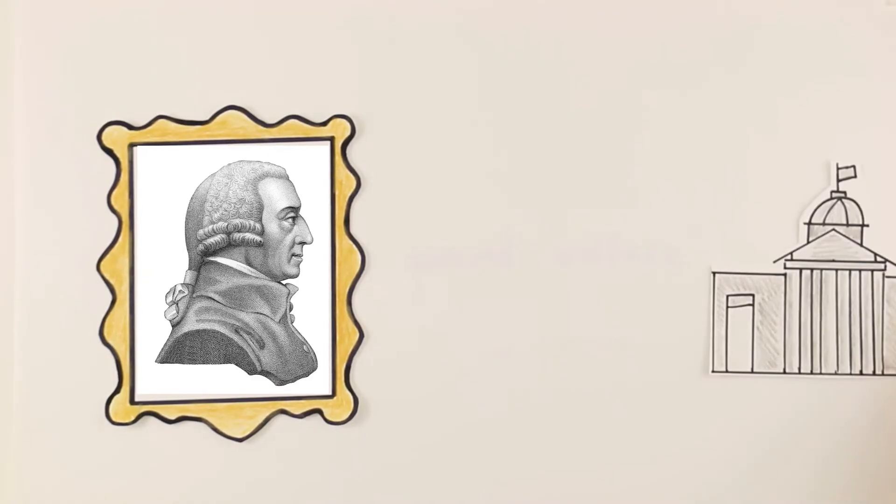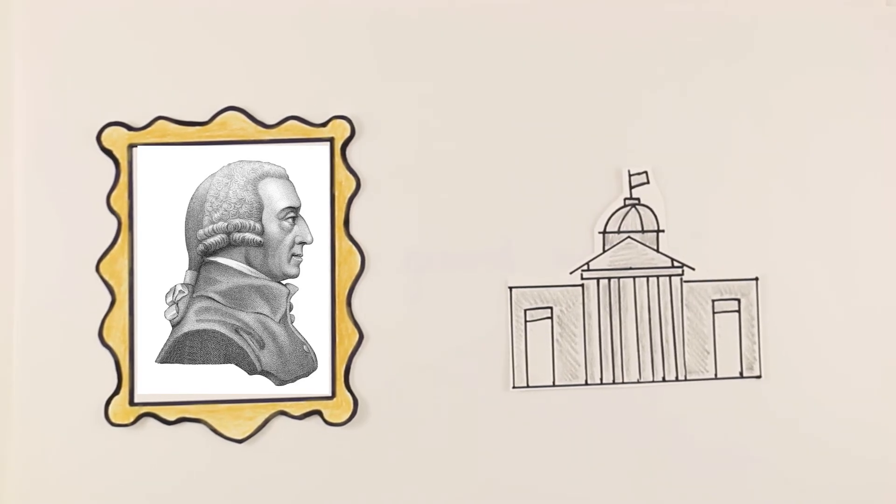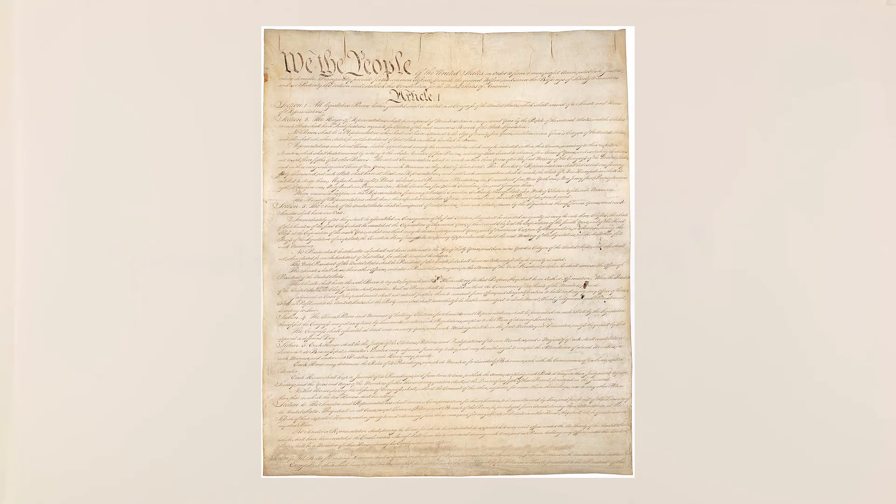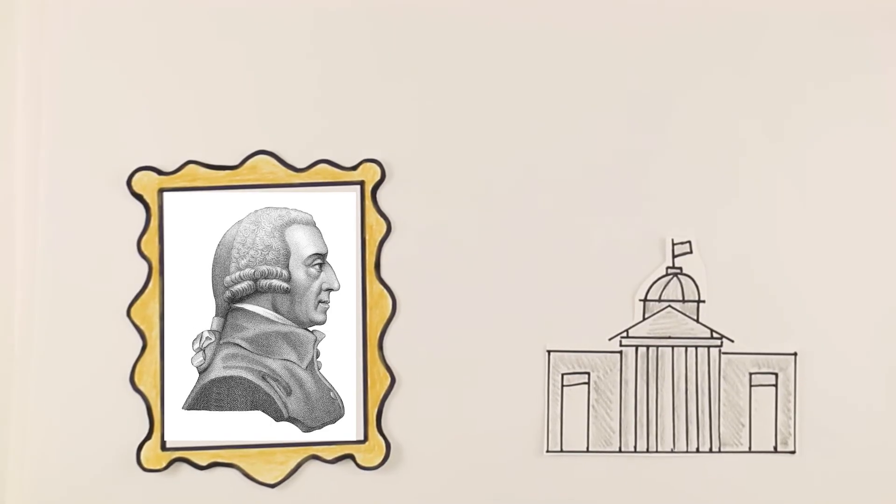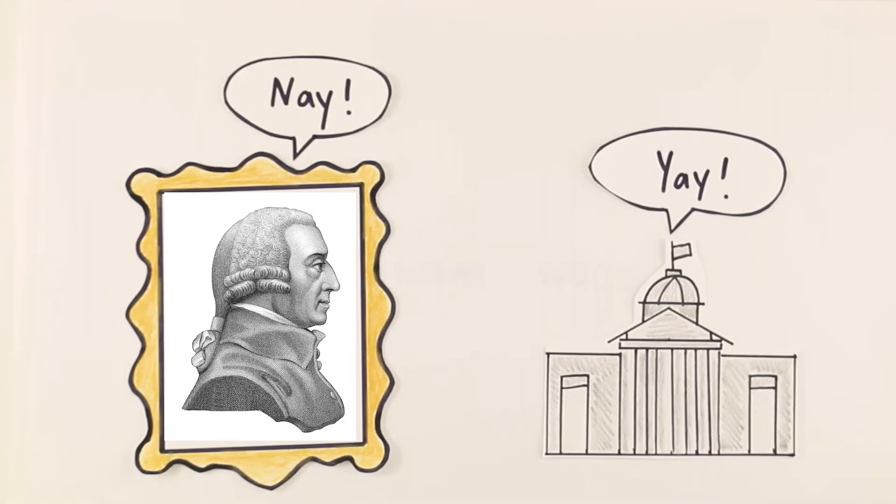While the United States does use many of Adam Smith's principles, there is government involvement in the economy, and this comes directly from the U.S. Constitution. The preamble of the U.S. Constitution states its goal is to promote the general welfare. Thus, the government has always taken a larger role in the economy than Smith probably would have recommended.